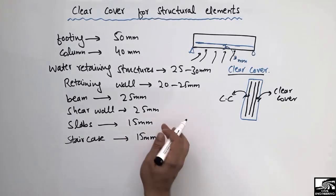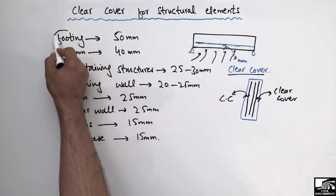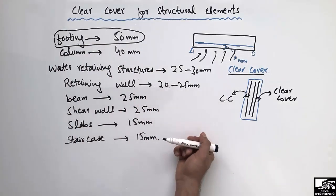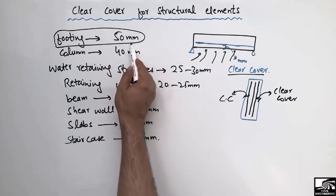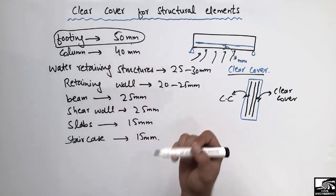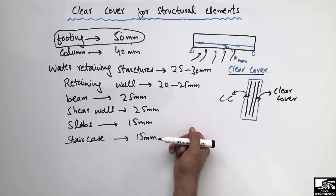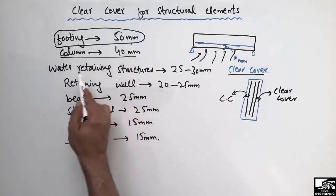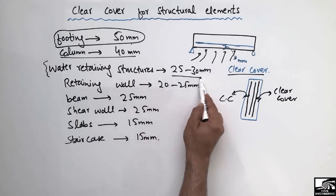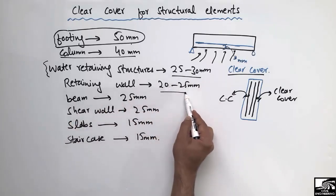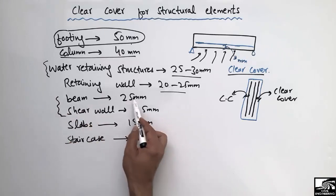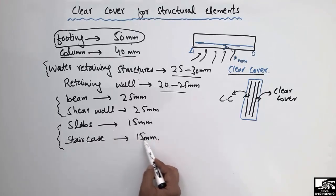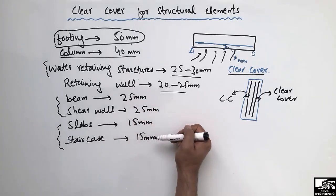Different structural elements have different clear cover values. The footing is mostly exposed to water because it is under the soil, so there are more chances for water to penetrate — that's why we provide a higher clear cover value. The higher the chances of water penetration, the more clear cover we provide to avoid corrosion. To summarize: footing is 50 mm, column is 40 mm, water retaining structures are 25–30 mm, retaining walls are 20–25 mm, beams and shear walls are 25 mm, and slabs and staircases have the least value of 15 mm. These values are general recommendations from various codes.